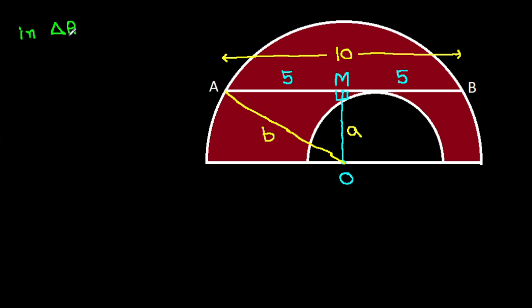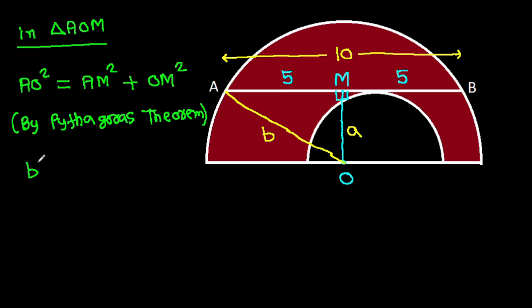In triangle AOM, AO square, which is b, equals AM square plus OM square by Pythagoras. This is the radius of the smaller semicircle a, and O is b. So b squared.